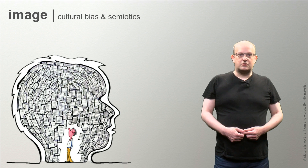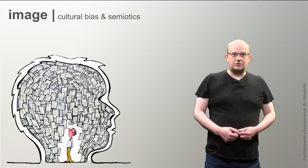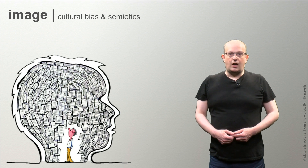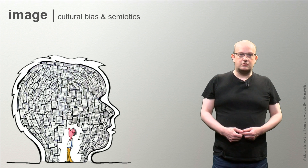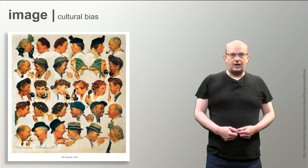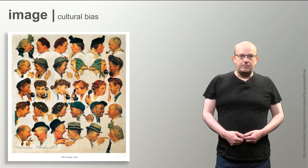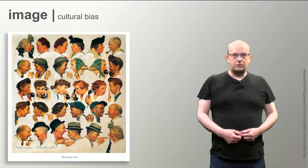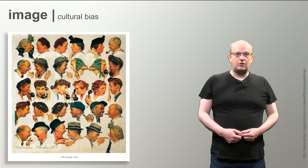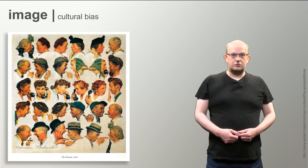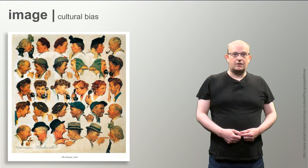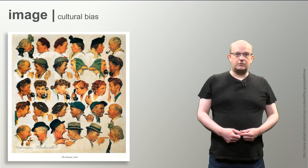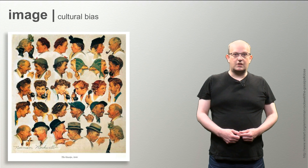You cannot look into someone else's head, so you will never know for sure how they think about your images. The first theme, cultural bias, means that all people have a different background and culture. When you want to visualize the unimaginable, you have to take those cultural backgrounds into account. All people have different views on reality — they might partially share a lot of concepts, but still there are many differences.